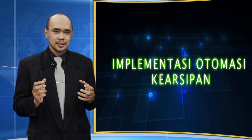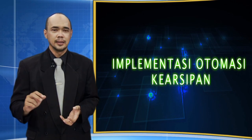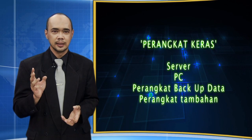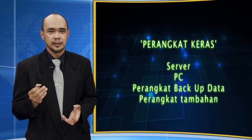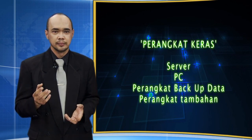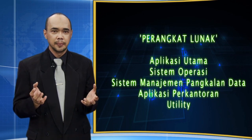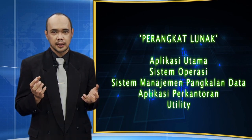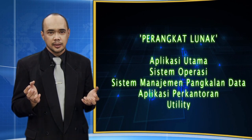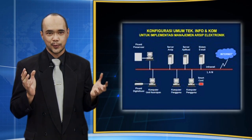Dalam implementasi otomasi diperlukan perangkat pendukung implementasi. Pertama, perangkat keras yang terdiri dari server, PC, perangkat backup data, dan perangkat tambahan. Kedua, perangkat lunak atau aplikasi utama, sistem operasi, sistem manajemen pangkalan data, aplikasi perkantoran, dan utility. Ketiga, infrastruktur jaringan komputer.